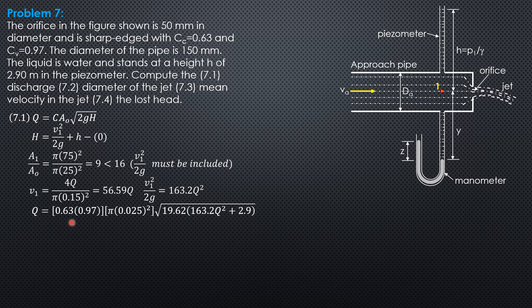Q divided by (0.63 × 0.97 × π(0.025)² × √19.62) equals 188.15Q. Squaring both sides to extract the radical gives (188.15Q)² equals 163.2Q² plus 2.9. Solving for Q, the discharge is 0.009072 cubic meters per second, or 9.072 liters per second.